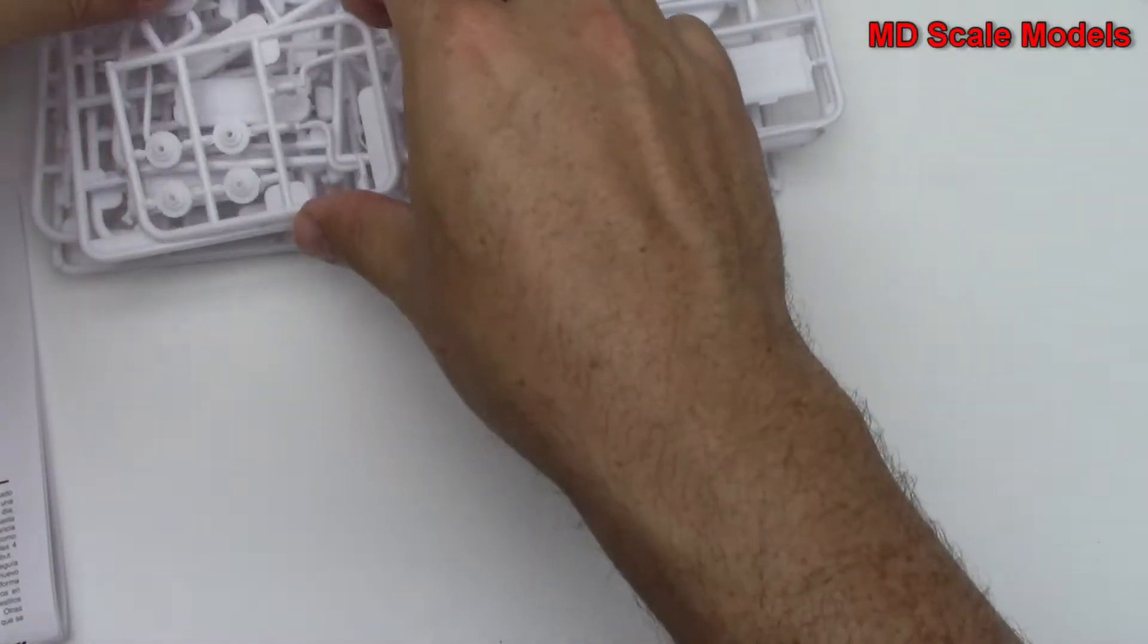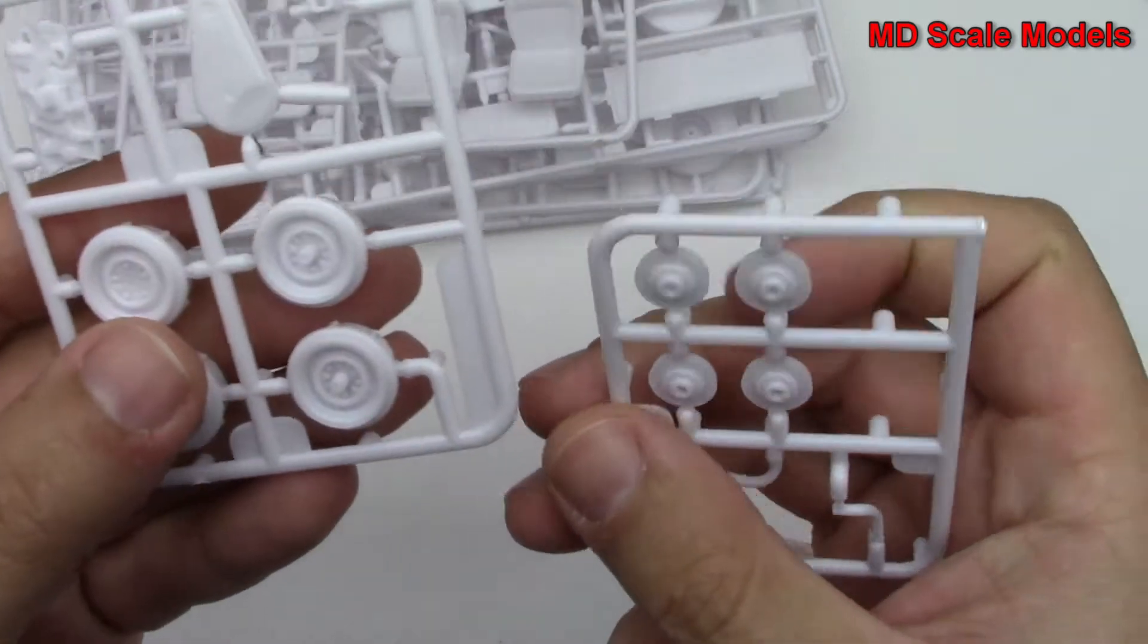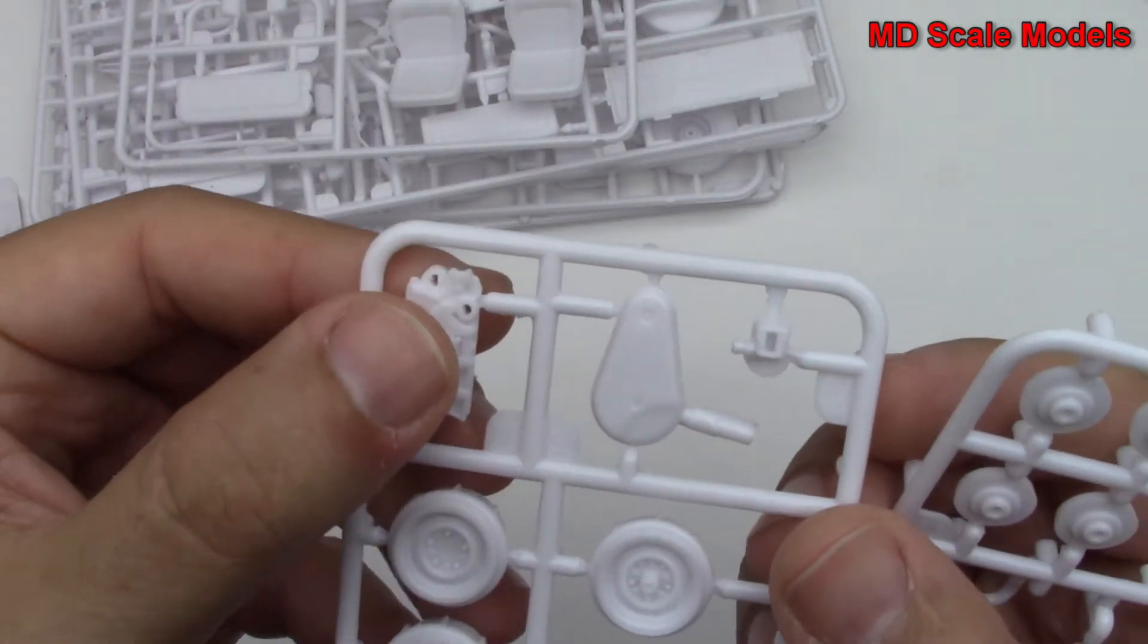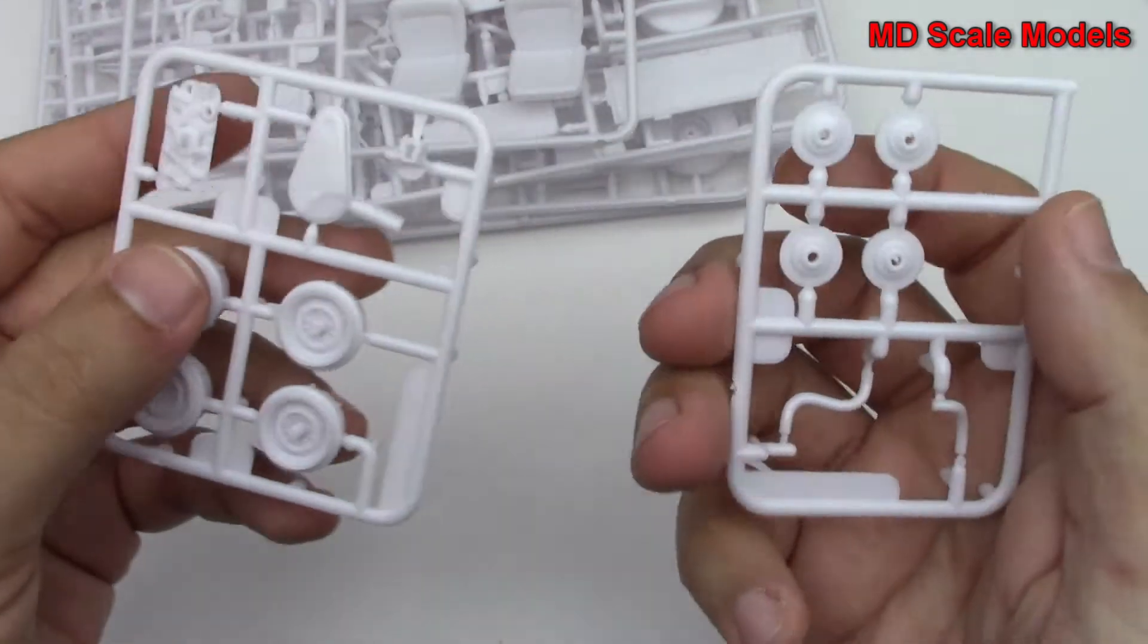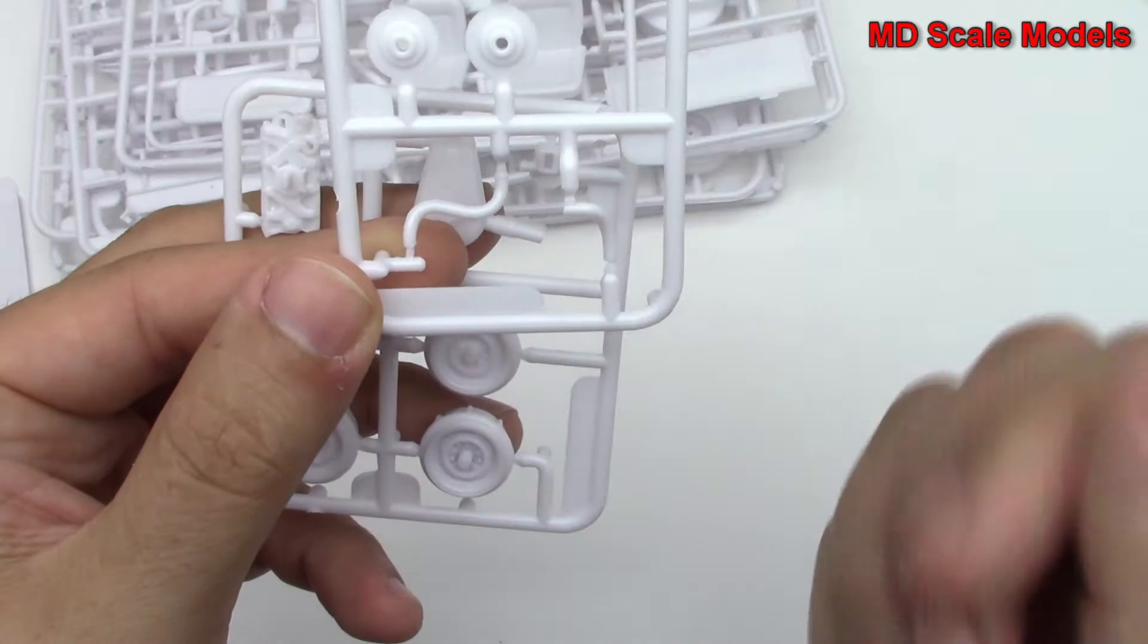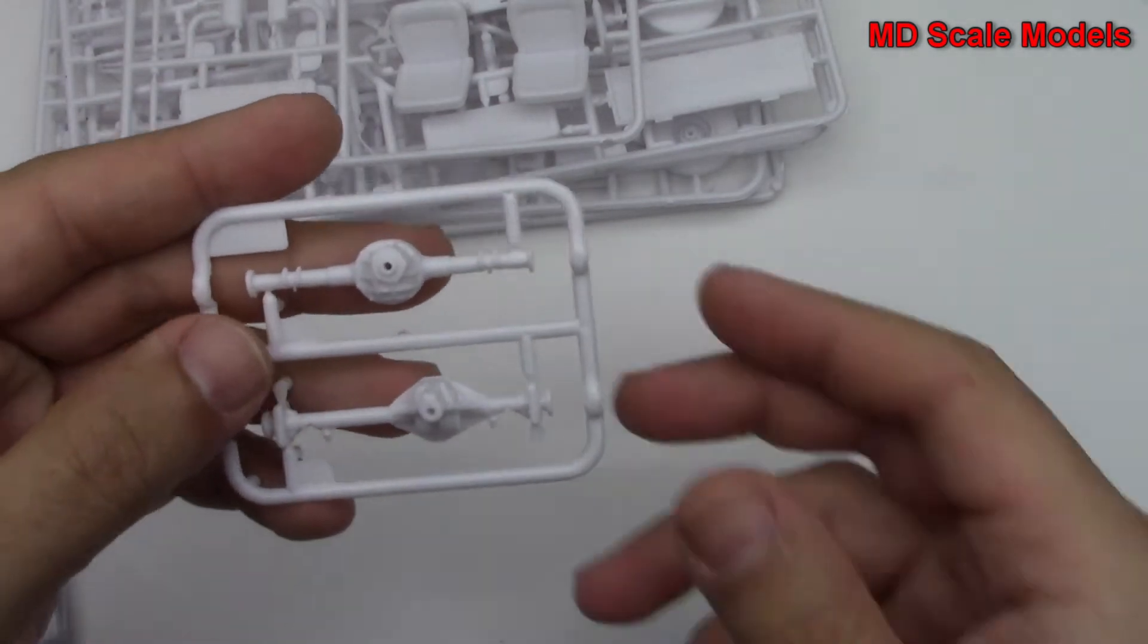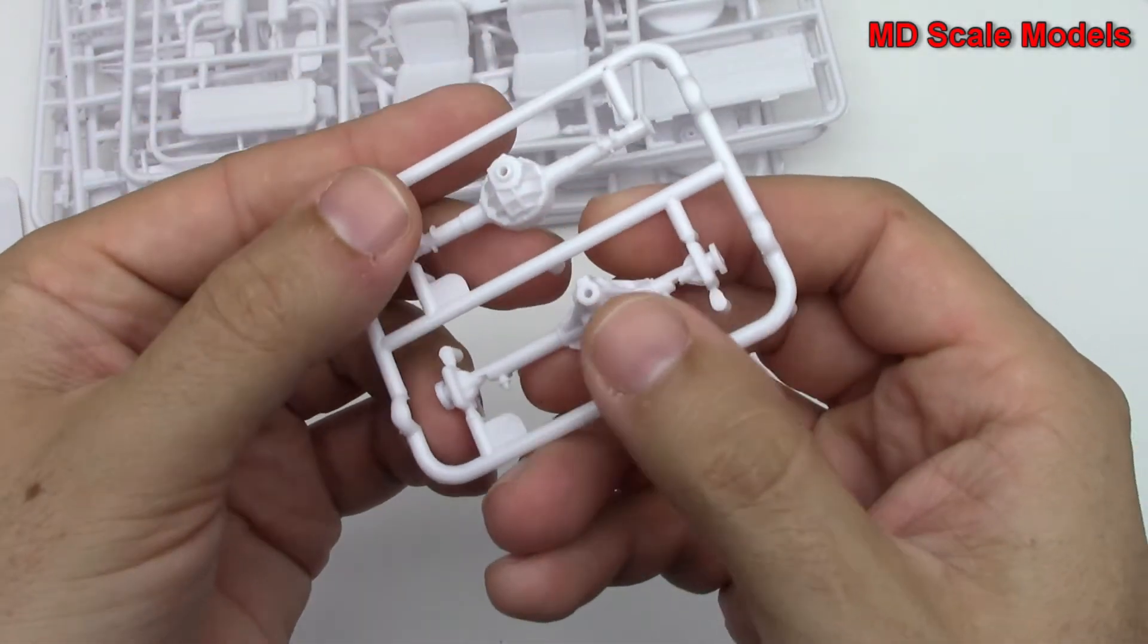We've got a number of sprues here. This looks like wheels and probably other parts of the wheels there. That's the top of our engine there. Here's probably our air intake. Some pipes for the engine bay there. Here we've got our rear axle and the differential there.